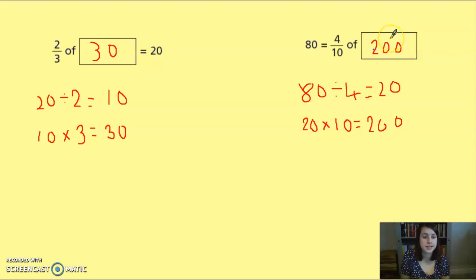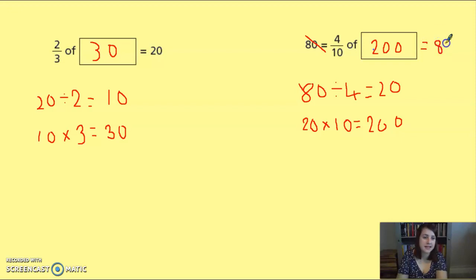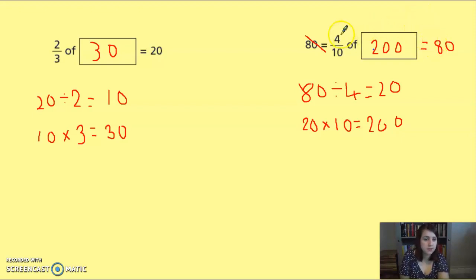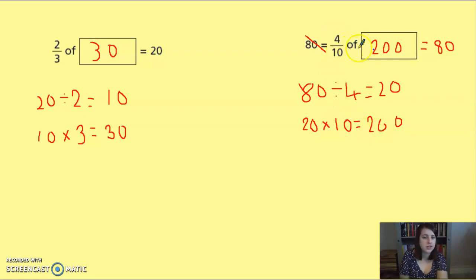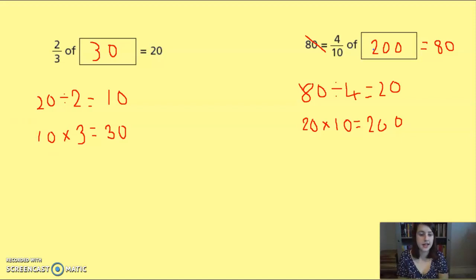For the second question, hopefully you got four tenths of 200. Even though this question is written a different way around, it means exactly the same thing — four tenths of 200 equals 80. So you use the exact same method: take 80, divide by four to get 20, then times by 10 to get 200. To double-check: 200 divided by 10 times by 4 gives you 80. Give yourself a tick if you got those right.